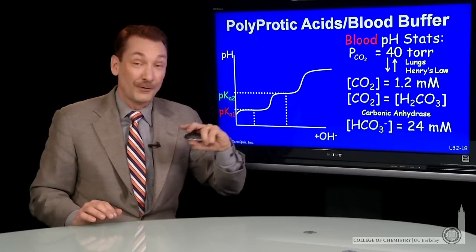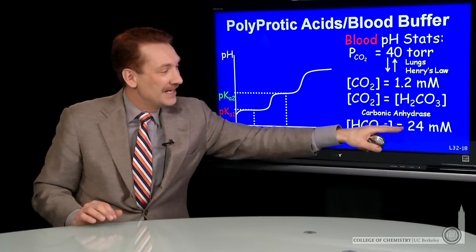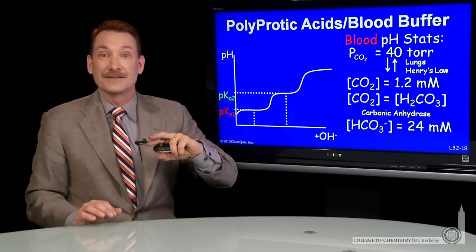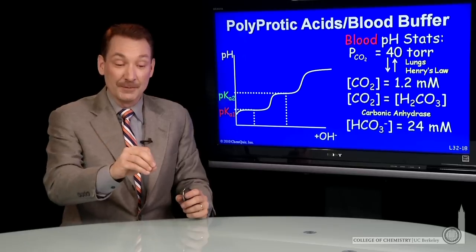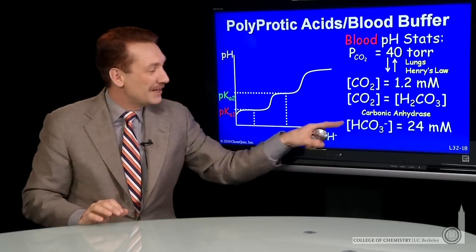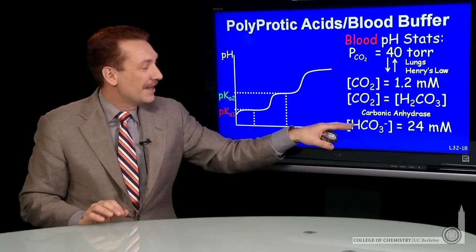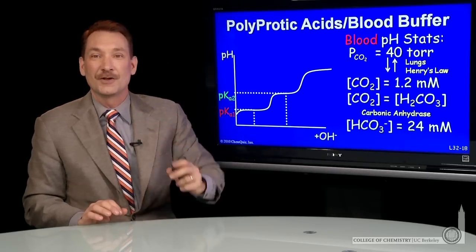Now, the base form, HCO3 minus, is maintained at about 24 millimolar by your kidneys. Your kidneys filter your blood, and they have the remarkable property of being able to remove, selectively, specific ions. So they can maintain the H3O minus concentration at 24 millimolar.